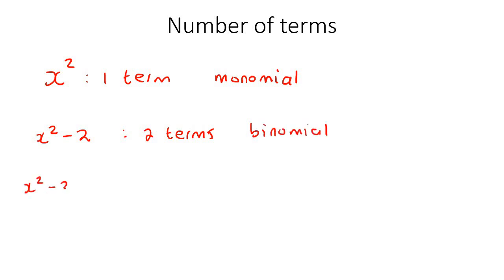Then you can get something like x squared take away three x take away four, which is now three terms, which now like a tricycle, you'd call it a trinomial.